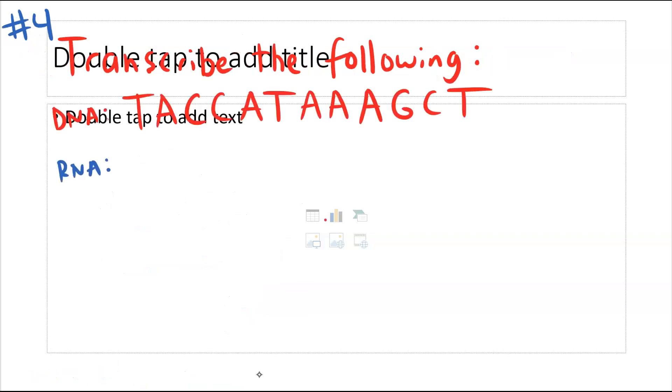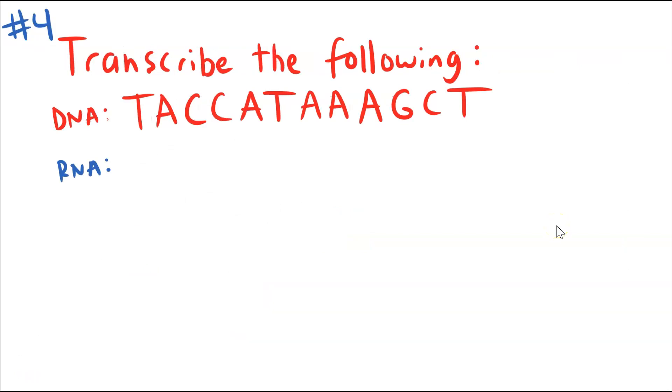Number four asks you to transcribe the following. Transcription takes DNA template and converts it into RNA nucleotides. So it's a chain of RNA nucleotides that are complementary to that DNA sequence. So for this example here, if we're going to transcribe that DNA, you're going to take that code A, U, G, G, U, A, U, U, U, C, G, A.